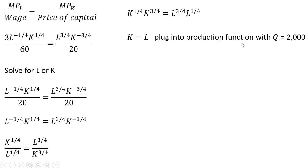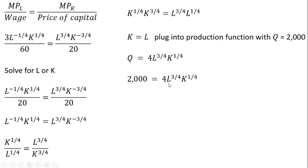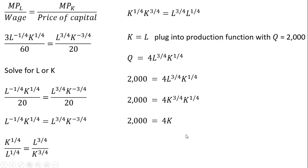Now we take K equals L and plug it into the production function where Q equals 2,000 — after all, we want to produce 2,000 units at the lowest possible cost. Since K equals L, I substitute K in place of L. Then K to the three-fourths times K to the one-fourth equals K by adding exponents. Dividing 2,000 by 4, we want to use 500 units of capital. Since L equals K, we also use 500 units of labor — that is our optimal input mix.